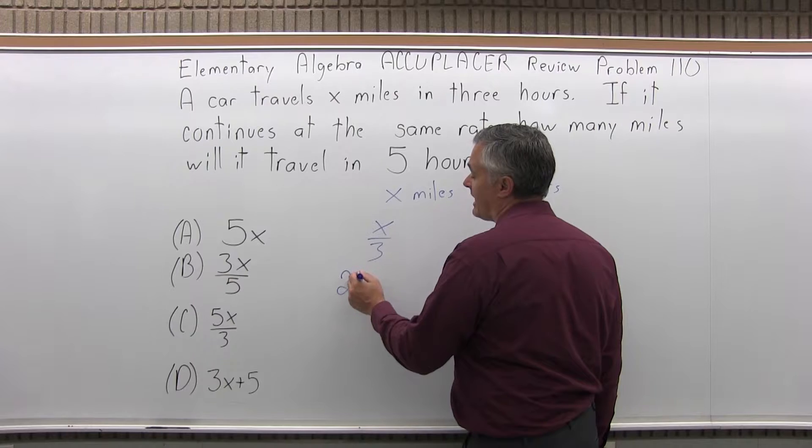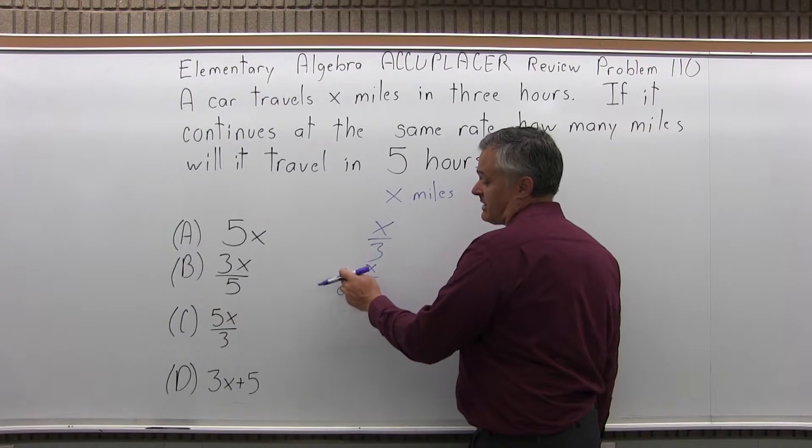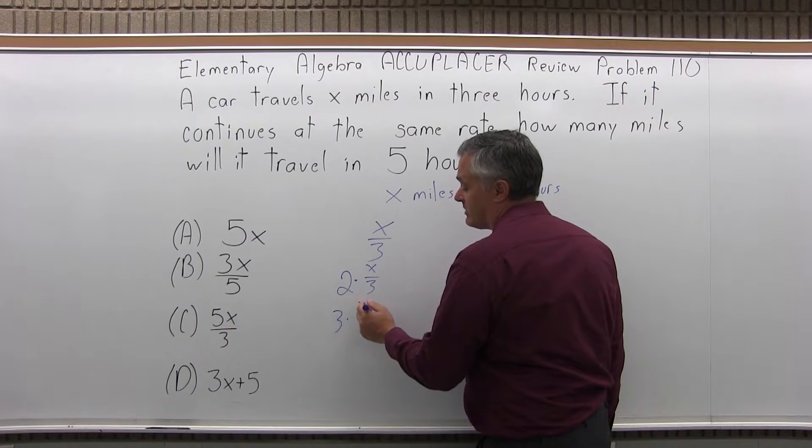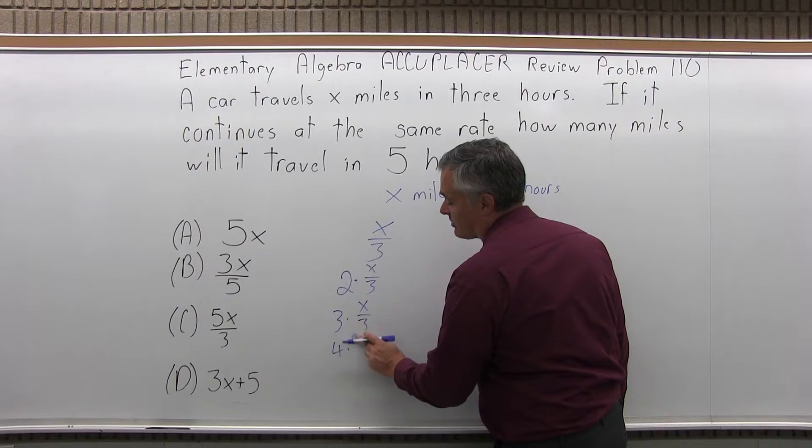In two hours you go two times X over three miles. The miles per hour times the number of hours. Three hours would be three times X over three. Four hours, four times X over three.